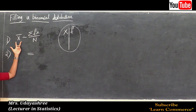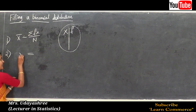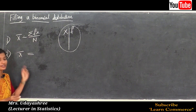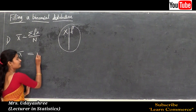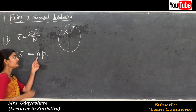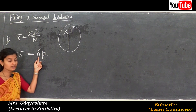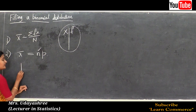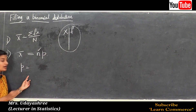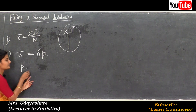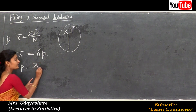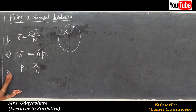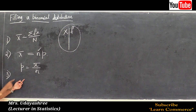Step 2 is to equate the mean of the observed frequency distribution with the theoretical mean of the binomial distribution. Here, x̄ equals np. Since n is generally given in the question, we need to estimate the value of p using the formula: p = x̄ / n.